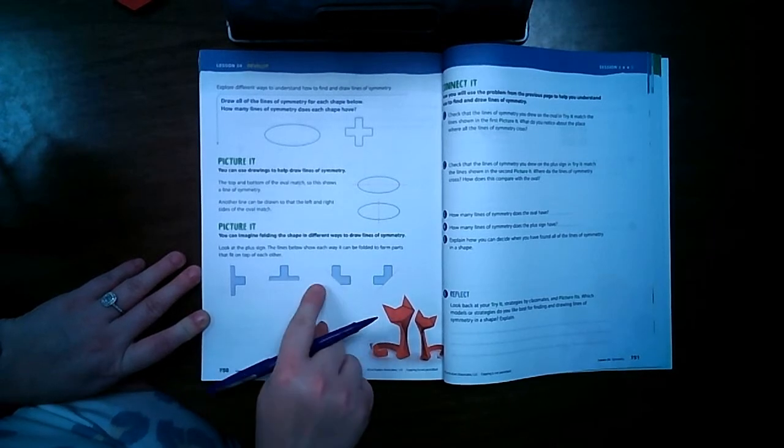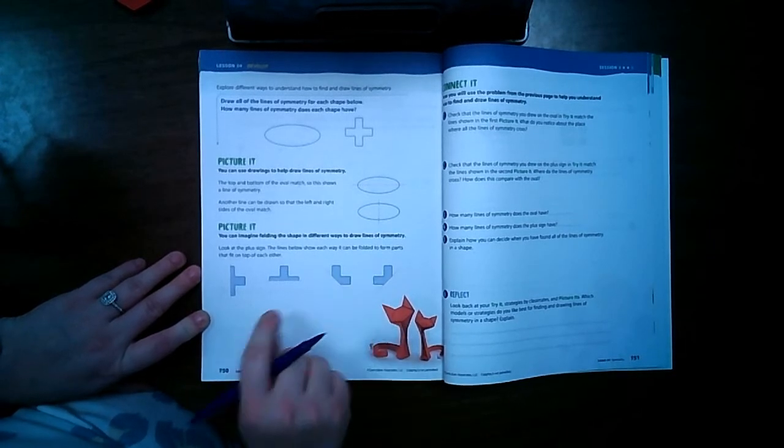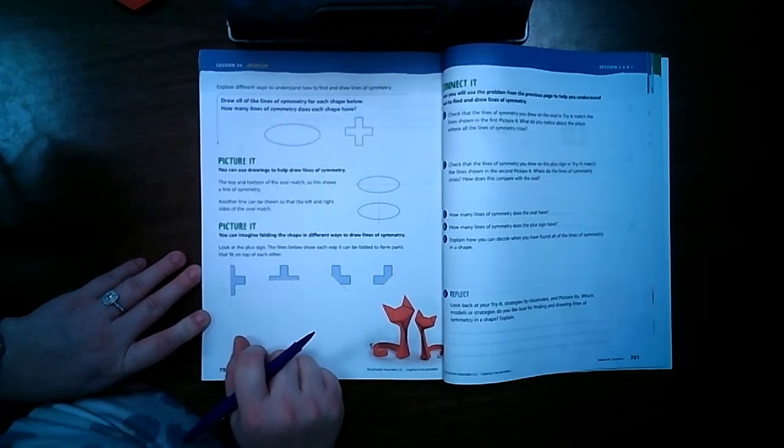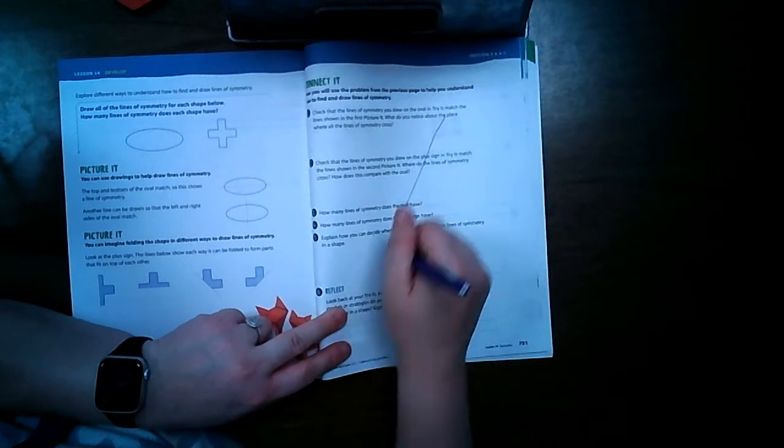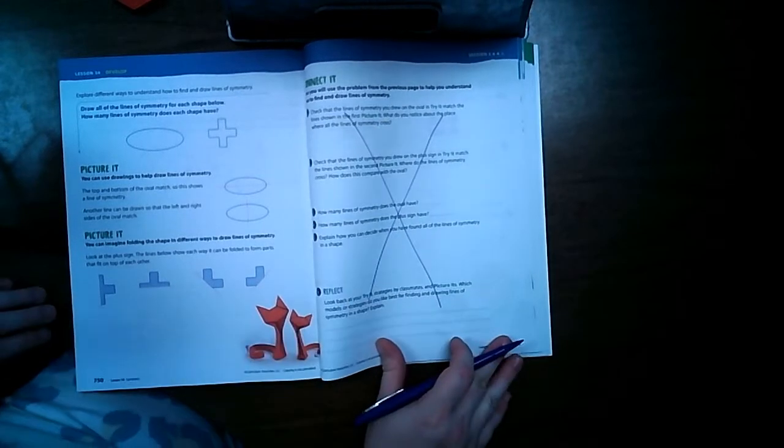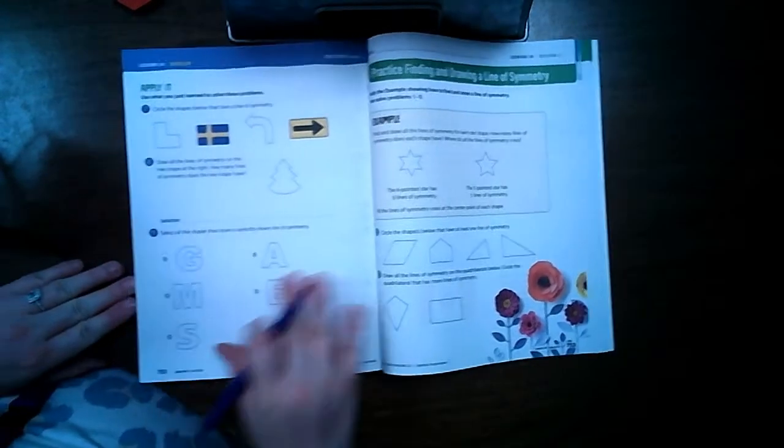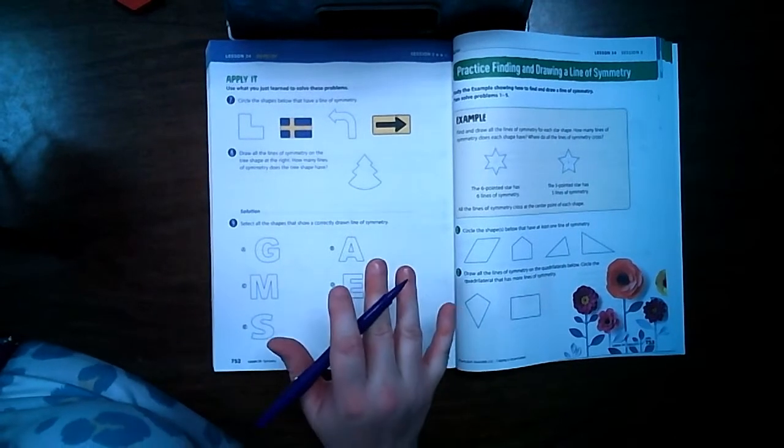It's showing you just half of the shape because the other half is folded over on top of it. That's what the shaded blue means. We're going to skip page 751 because we've already done that, so we're moving on to page 752.